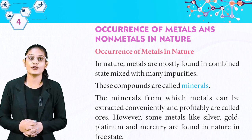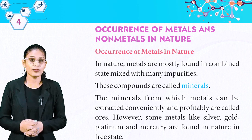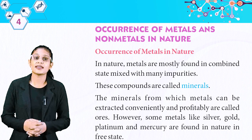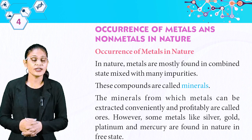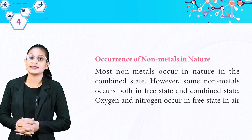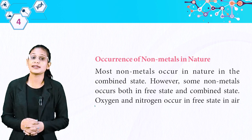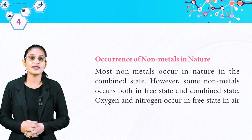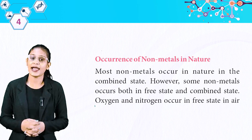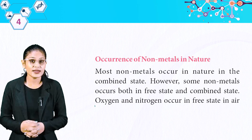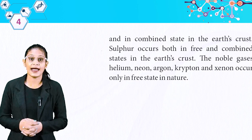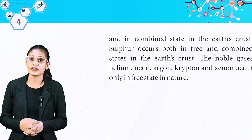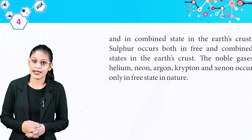However, some metals like silver, gold, platinum and mercury are found in nature in free state. Most non-metals occur in nature in the combined state. However, some non-metals occur both in free state and combined state. Oxygen and nitrogen occur in free state in air and in combined state in Earth's crust. Sulfur occurs both in free and combined states in Earth's crust.